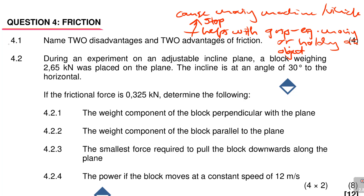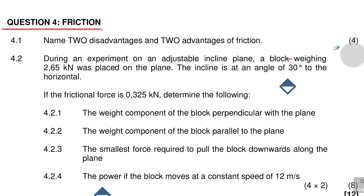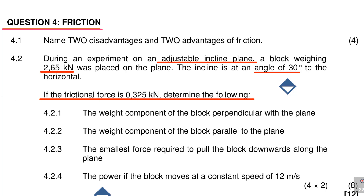Anyway, this was not much of the lesson I'm working on. I'm working on calculations. The question says: during an experiment on an adjustable inclined plane, a block weighing 2.5 kilonewtons was placed on the plane. The incline is at an angle of 30 degrees to the horizontal and the frictional force is given. Determine the following.